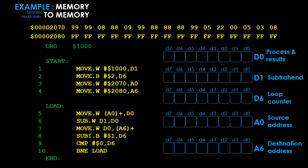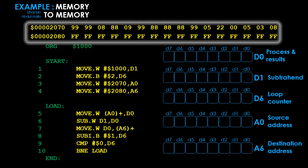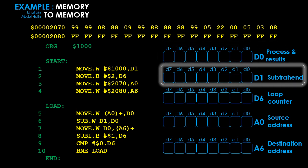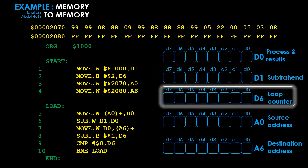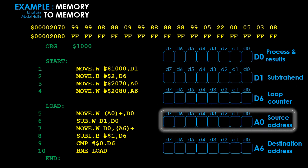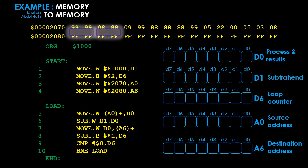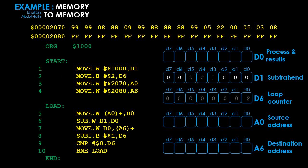Before simulating the program, we can see the 16 bytes of data at address 2070 and the 16 bytes at address 2080 in memory. We also observe data register D0 for processing results, D1 for the subtrahend, D6 as the loop counter, A0 pointing to the source operand address, and A6 pointing to the destination address. Upon execution, the first instruction moves 1000 into D1 (our subtrahend). The second instruction moves 2 into D6, initializing the loop counter to two.